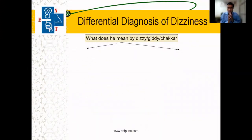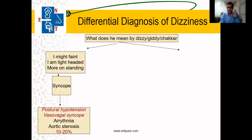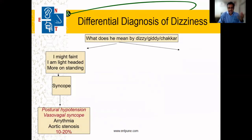When a patient says he is having dizziness, giddiness, vertigo, or 'chakkar', we need to ask him what exactly he feels. If the history says the patient feels he might faint and is feeling lightheaded, those are key clues.